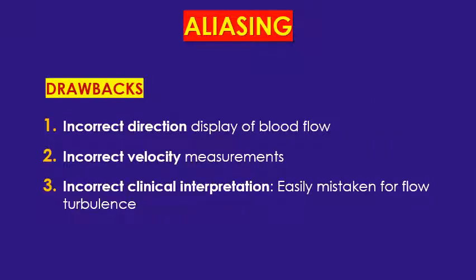What are the drawbacks of aliasing? First, it gives the wrong direction of flow — for example, flow toward the heart may appear as flow away from the heart. Second, it gives wrong measurements; if you get the waveform you cannot measure the peak systolic velocity if there is aliasing — you have to correct the aliasing first.